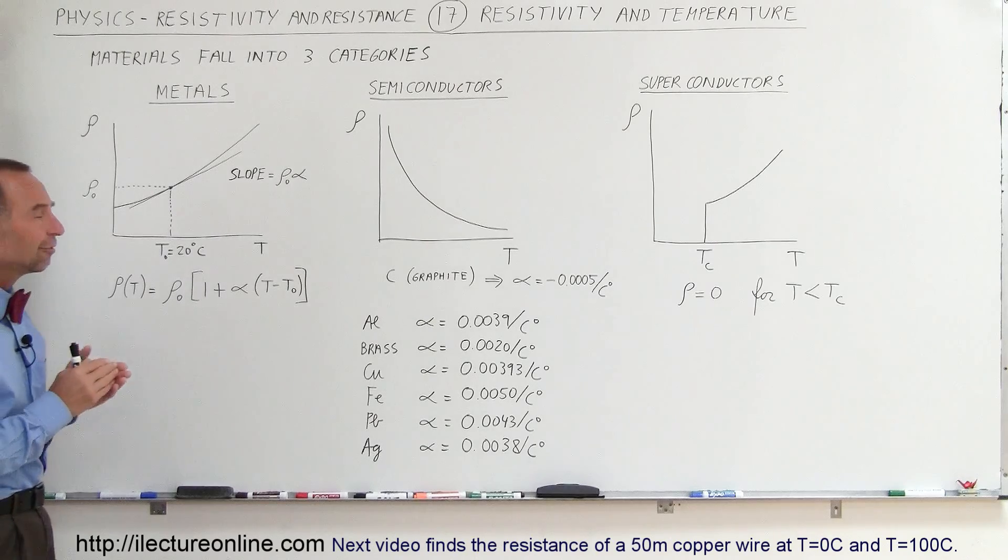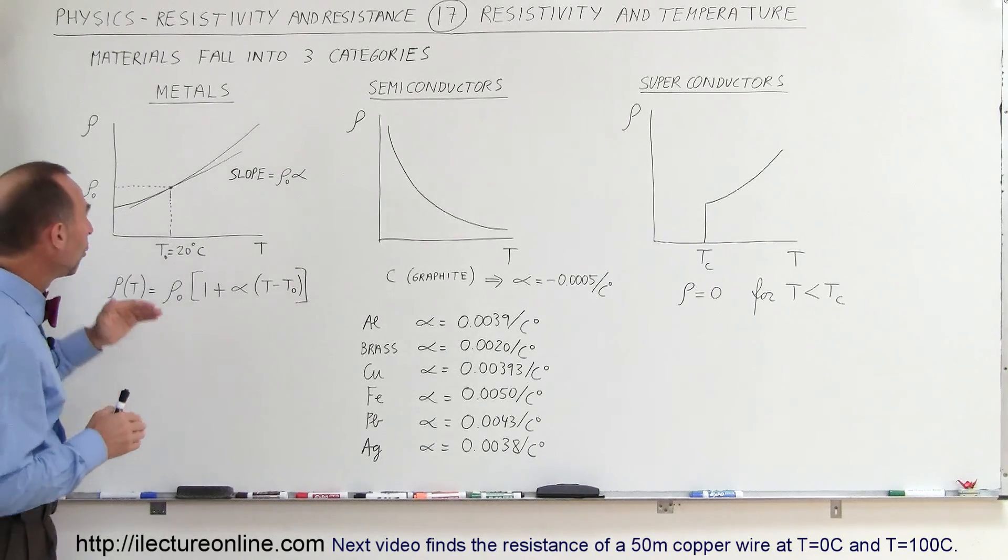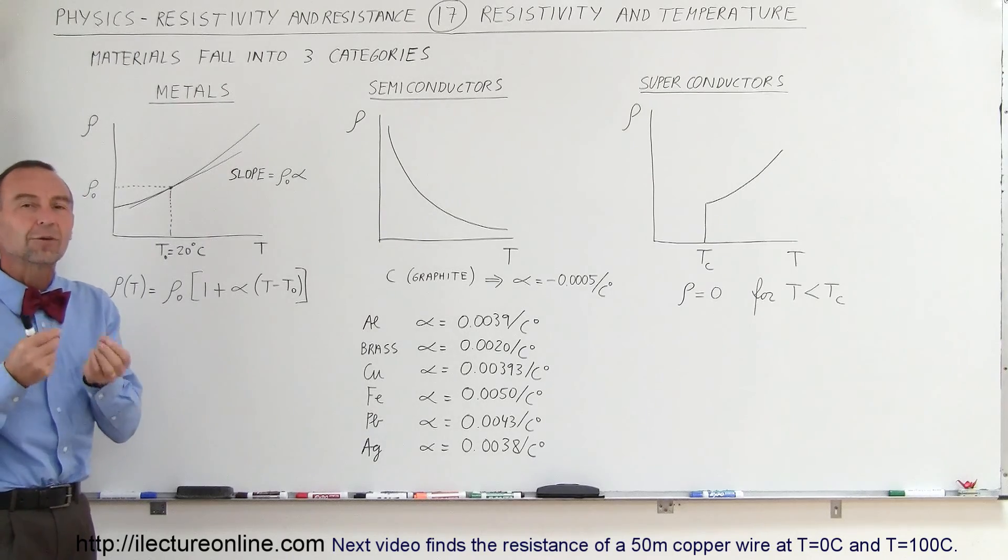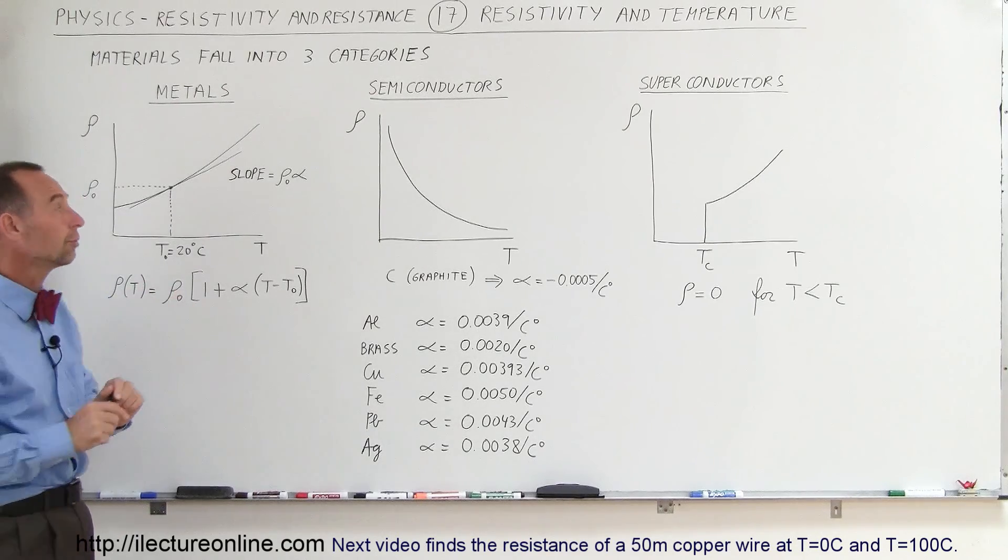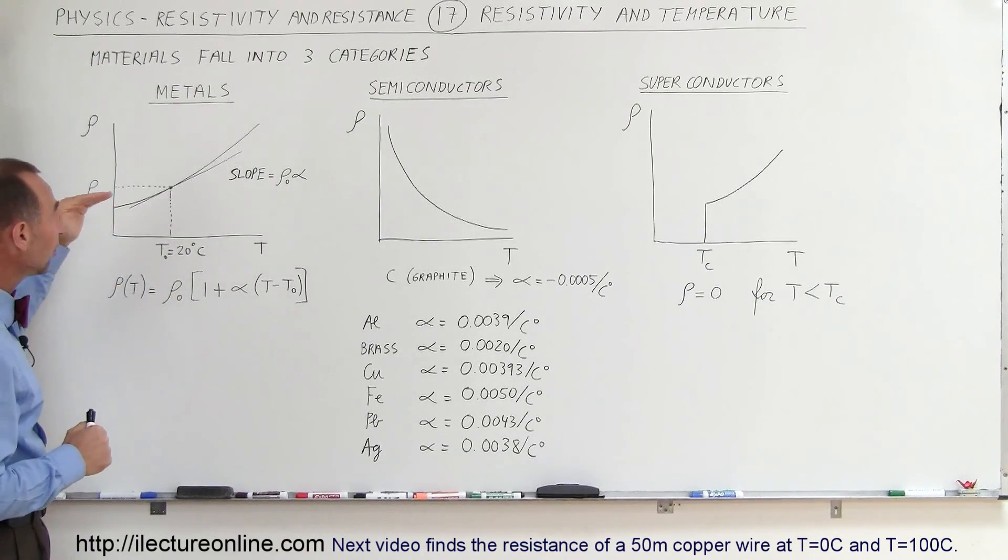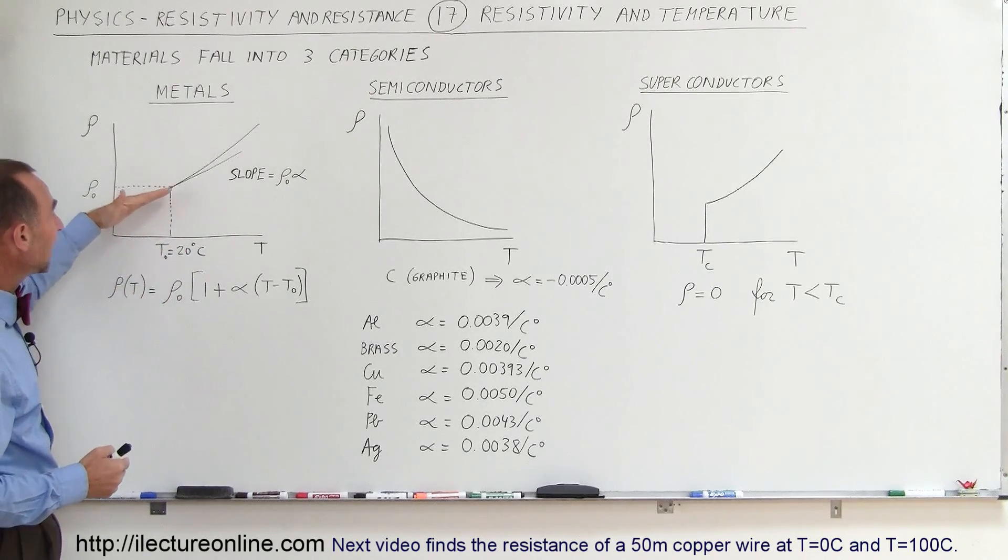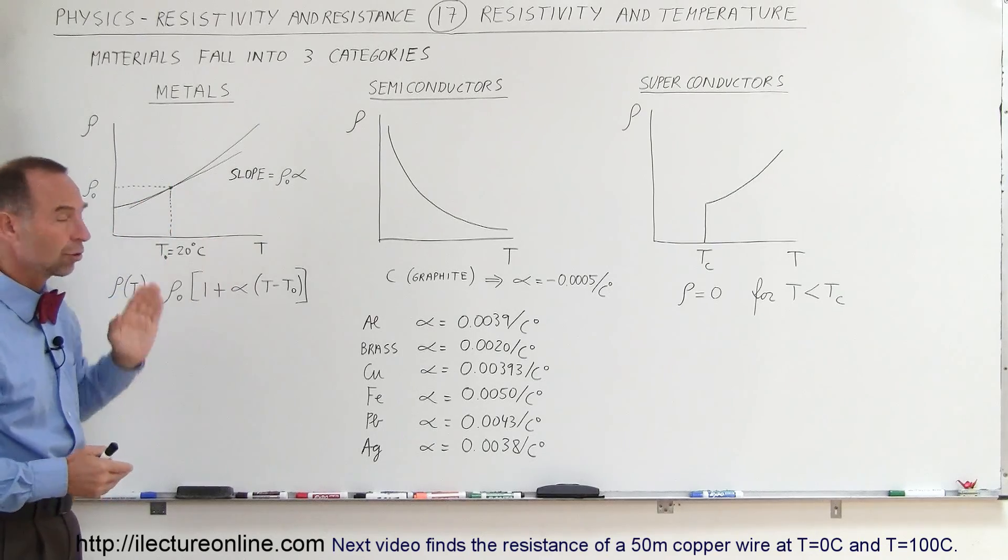We found that the vast majority of metals, when you run a current through them, will exhibit a certain amount of resistivity or resistance to the current flow. We find that resistivity changes with temperature. For example, the resistivity actually increases for increasing temperatures.